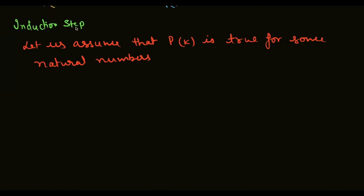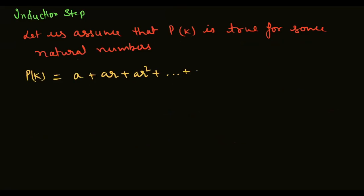Next step is induction step. Let us assume that Pk is true for some natural number k. K की value put करते हैं: Pk = a + ar + ar² + ... + arᵏ⁻¹ = a(rᵏ - 1)/(r - 1).